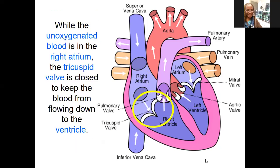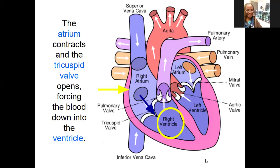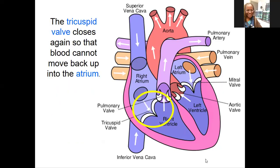From the right atrium, that unoxygenated blood goes through the tricuspid valve — tricuspid because it has three sections on that valve. The unoxygenated blood from the tricuspid valve then goes to the right ventricle. Remember, that tricuspid valve between the right atrium and the right ventricle ensures that blood does not backflow. So this unoxygenated blood is flowing from the vena cava to the right atrium, then to the right ventricle.